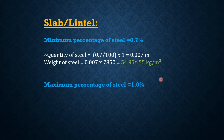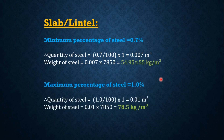The maximum percentage of steel required in a slab is 1%. Therefore, the quantity of steel equals 1 divided by 100 multiplied by 1, which gives 0.01 meter cube of steel. The weight of the steel equals 0.01 multiplied by the density of steel, that is 7850. Multiplying these two values gives 78.5 kg per meter cube.